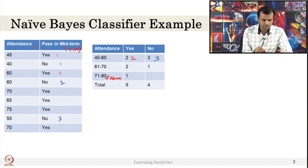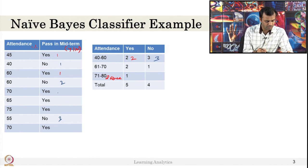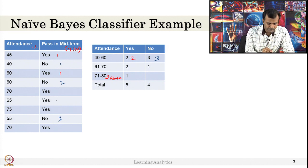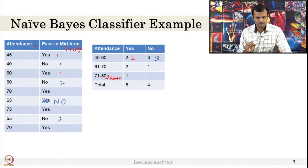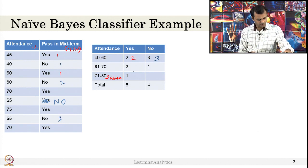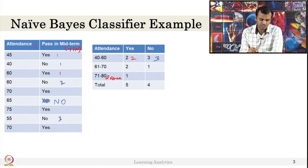For 61 to 70, there are 2 yes and 1 no, that is 3 total. And for 71 and above, there is only 1 yes. So if you count these numbers: total yes is 5, total no is 4, total number is 9.